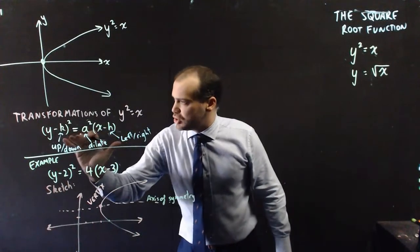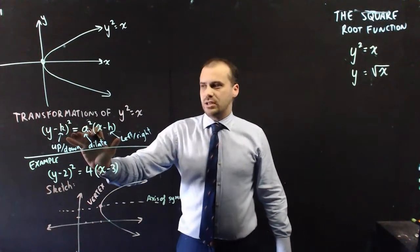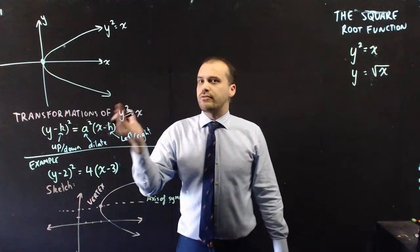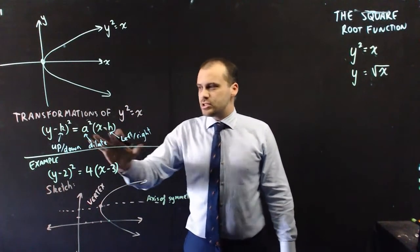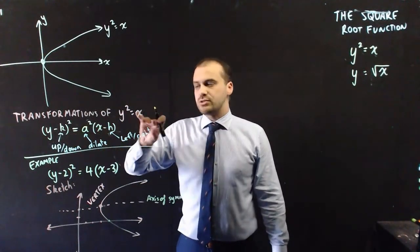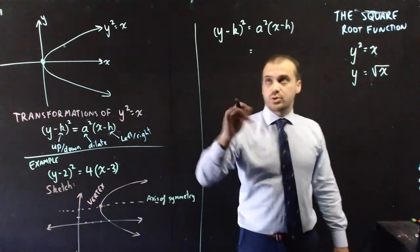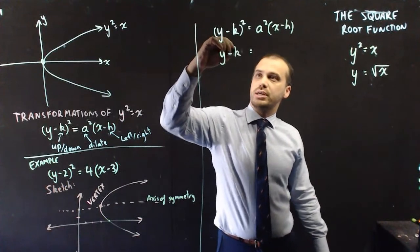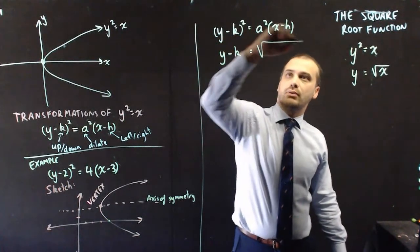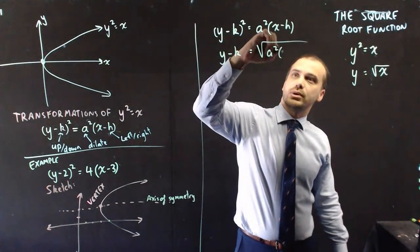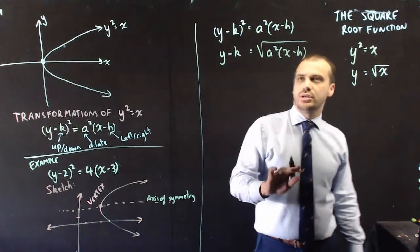Now, looking at this general form of our equation again, this is not the square root function. This is just a relation. Let's rearrange this so that it is a square root function. Now, taking the square root of both sides will mean that this is y minus k, and we get the square root of a squared x minus h.